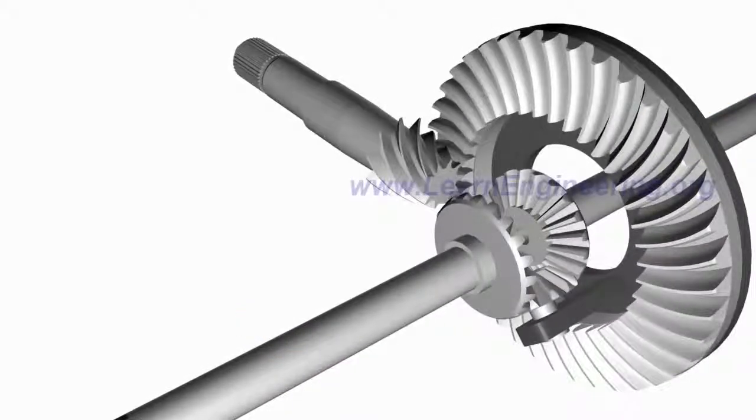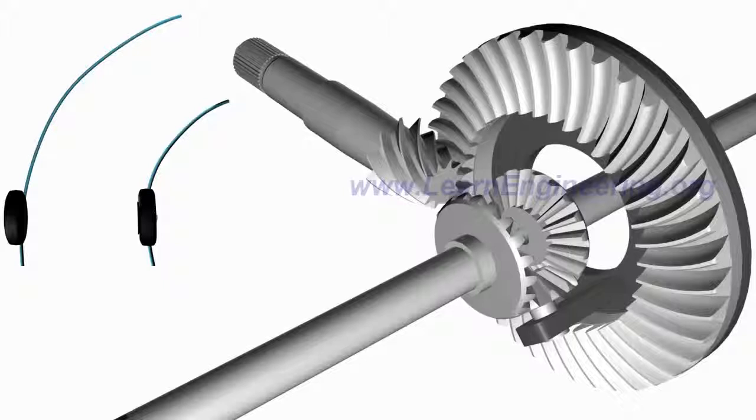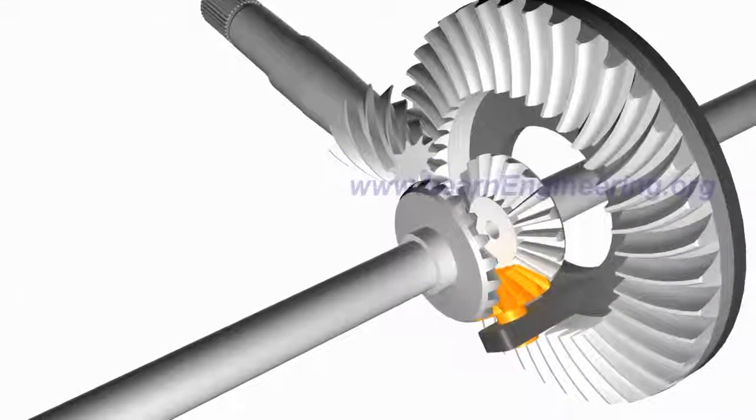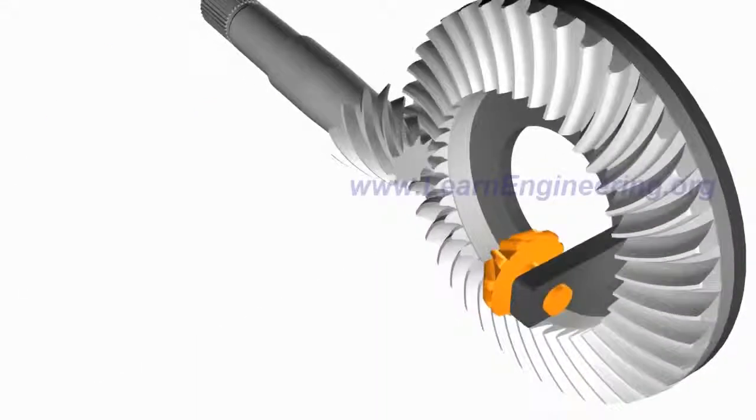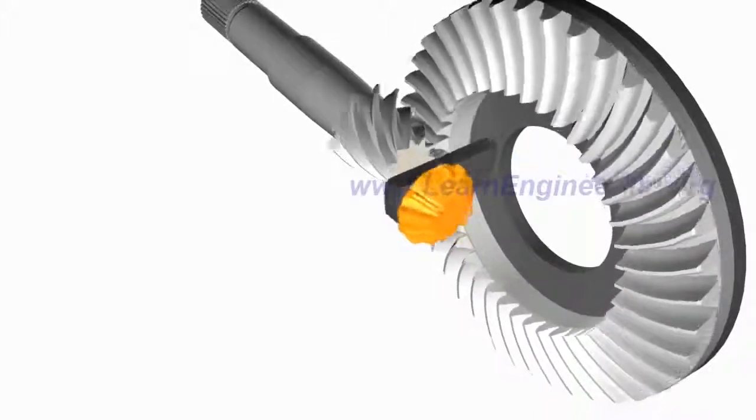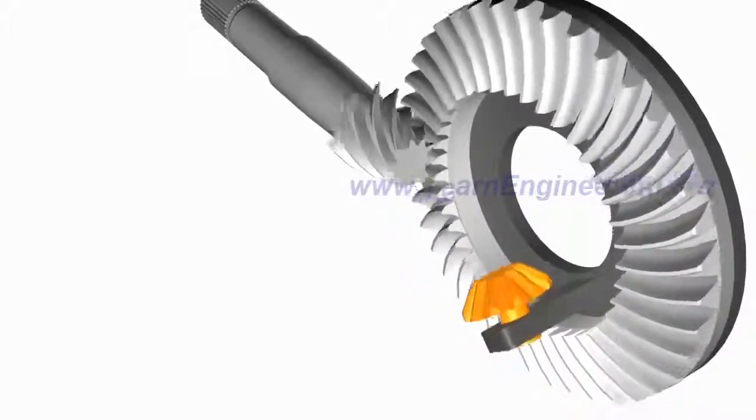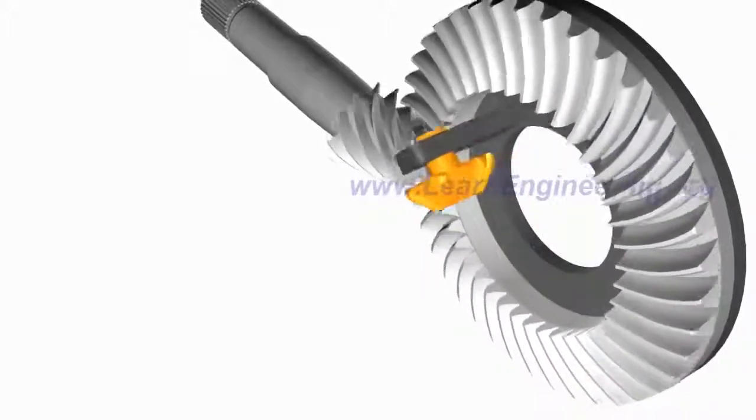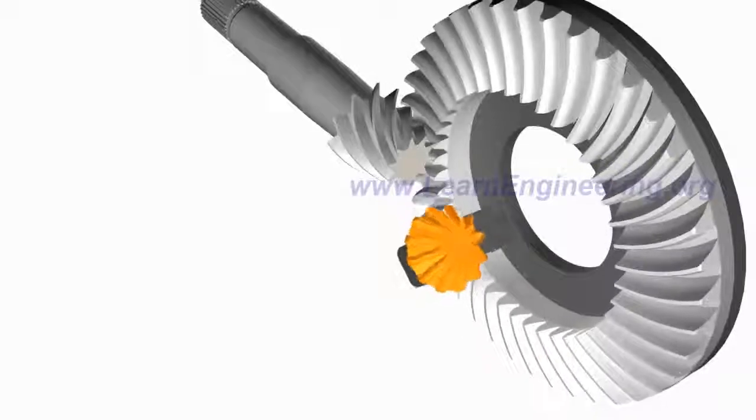Now, consider the case when the vehicle is taking a right turn. The spider gear plays a pivotal role here. Along with the rotation of the ring gear, it rotates on its own axis. So, the spider gear is having a combined rotation.